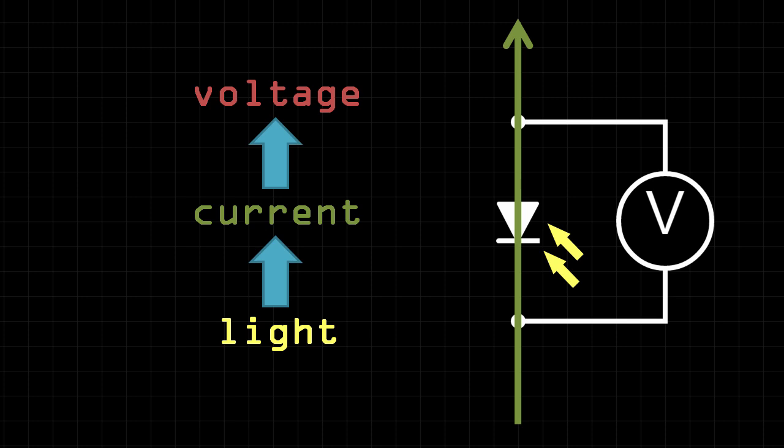If we place a voltmeter across the LED, we'll find that we can measure a potential difference across it. What this means is that we can use an LED to detect light.